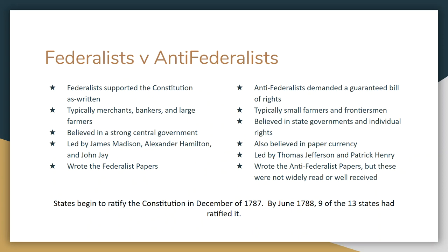Federalists supported the Constitution; Anti-Federalists supported things the way they were. The Anti-Federalists' number one demand was a guaranteed Bill of Rights. Federalists said you don't need that because each state has its individual rights. The Federalist camp were merchants, bankers, large farmers — people with money. Anti-Federalists were typically small farmers and people living on the frontier. Federalists wanted a strong central government; Anti-Federalists wanted state governments and individual rights. Both sides had strong leaders: for the Federalists, James Madison, Alexander Hamilton, and John Jay. For the Anti-Federalists, Thomas Jefferson and Patrick Henry — who said 'give me liberty or give me death.'